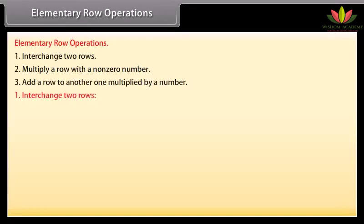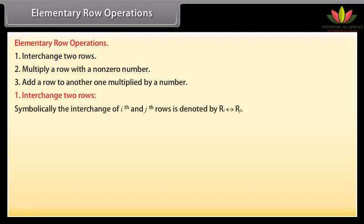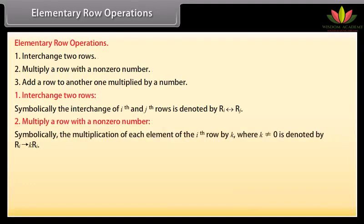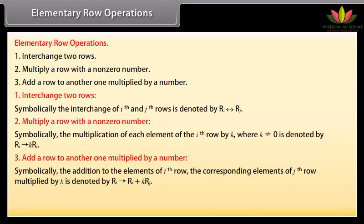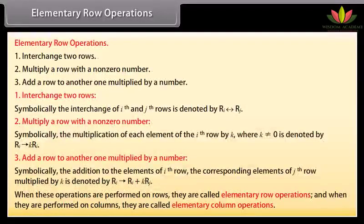Let us go through them one by one. Interchange two rows: symbolically, the interchange of i-th and j-th rows is denoted as given. Multiply a row with a non-zero number: symbolically, the multiplication of each element of the i-th row by k, where k ≠ 0, is denoted as given. Add a row to another one multiplied by a number: symbolically, the addition to the elements of the i-th row of the corresponding elements of the j-th row multiplied by k is denoted as given. When performed on rows, these are called elementary row operations; when on columns, they are called elementary column operations.